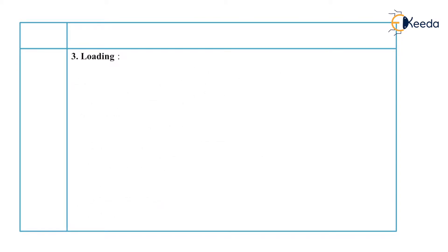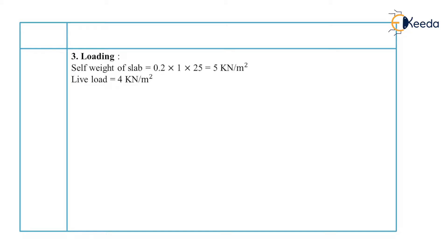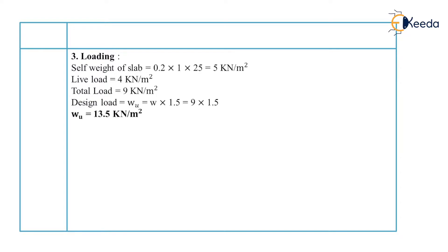Our third step is to calculate loading. First, we calculate the self weight of the slab using: volume into density, which gives B × D × 25 = 5 kN per meter square. The live load inclusive of floor finish is 4 kN per meter square, so total load is 9 kN per meter square. Converting to design load by multiplying by the factor of safety gives WU equal to 13.5 kN per meter square.